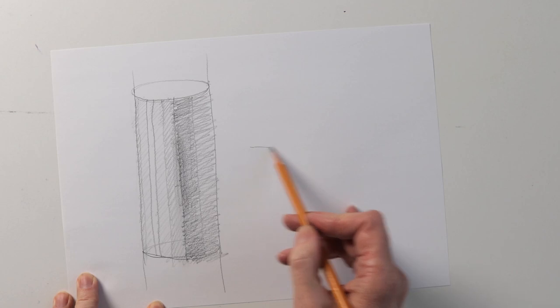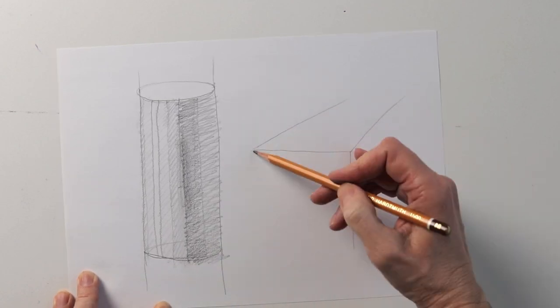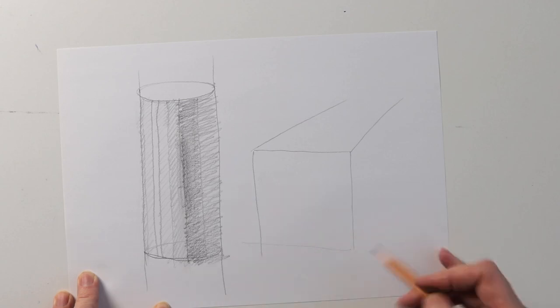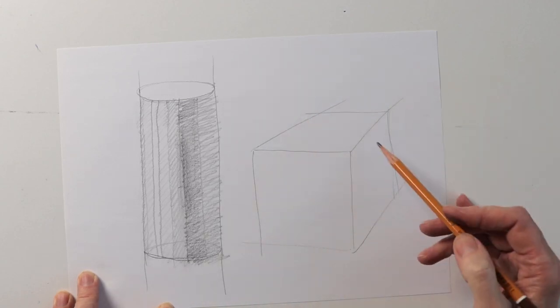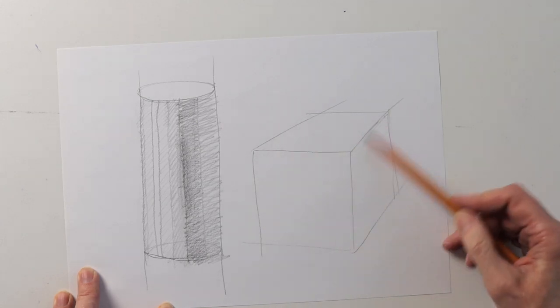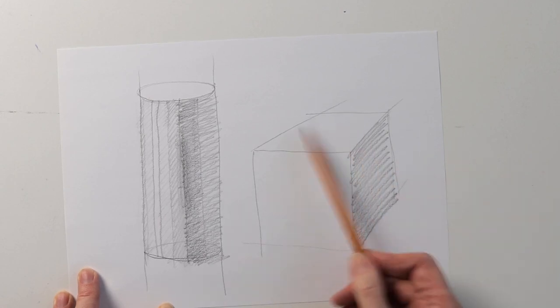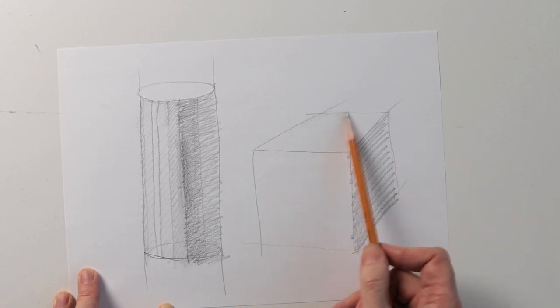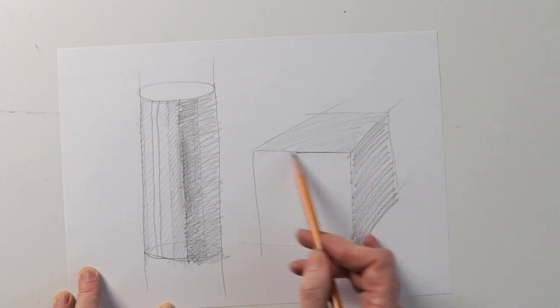Now the cube. I probably should have started with it because it's considered the simplest figure. Nevertheless, let's say the light is coming from the left. And this edge is in the shadow. The top side is the halftone. And to make the front lightest surface seem even lighter, I intensify the shadow on the border with it.